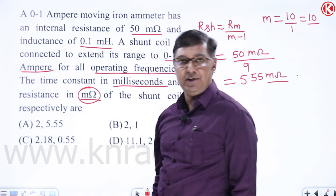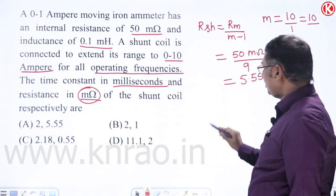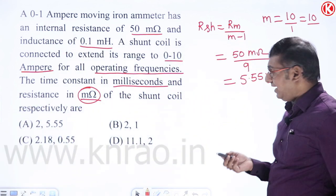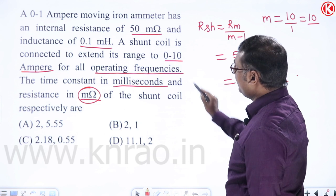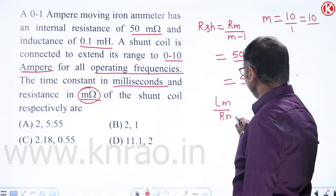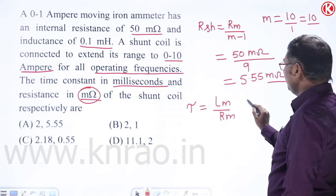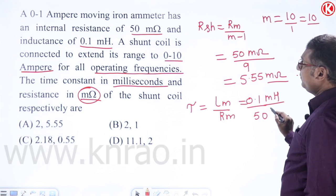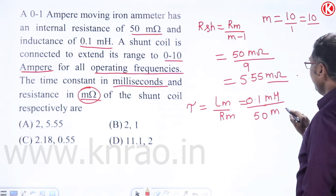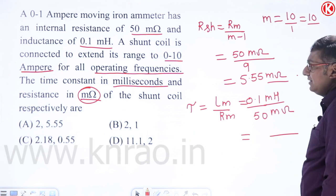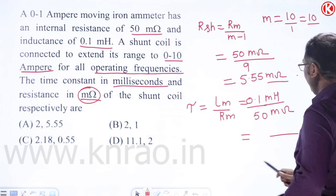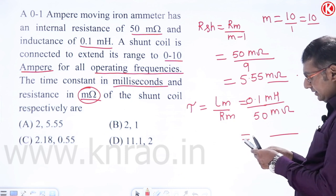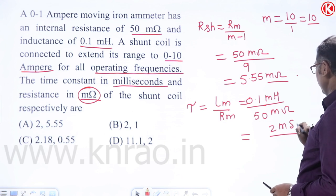The time constant = Lm/Rm = 0.1 mH / 50 mΩ = 0.1/50 = 2 milliseconds. Since the time constants must be equal, the shunt coil also has a time constant of 2 ms. Therefore the answer is 2 ms and 5.55 mΩ.